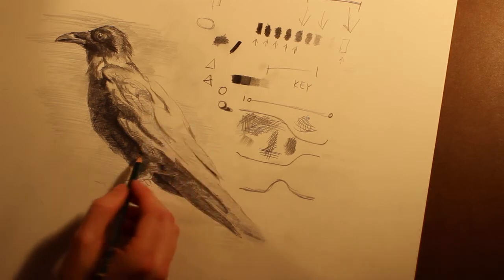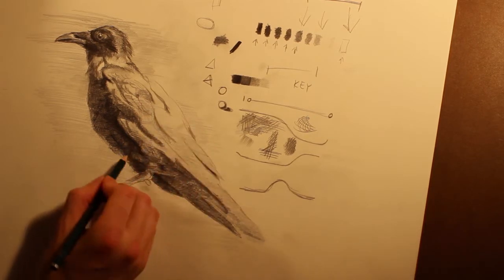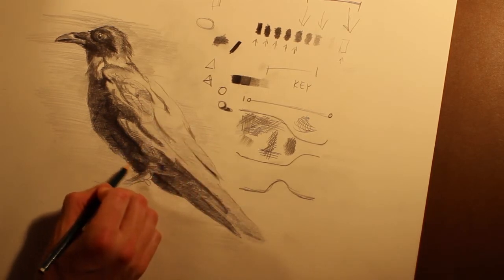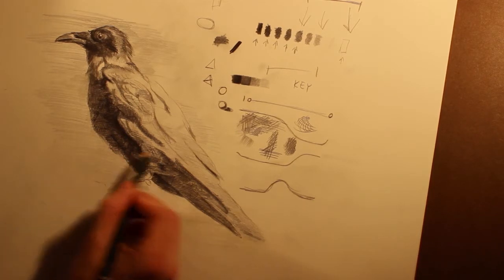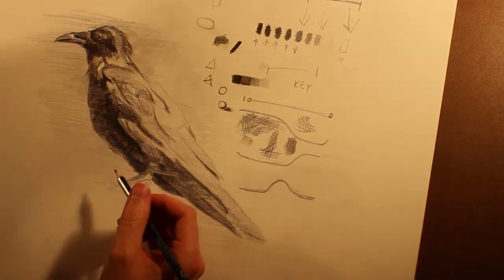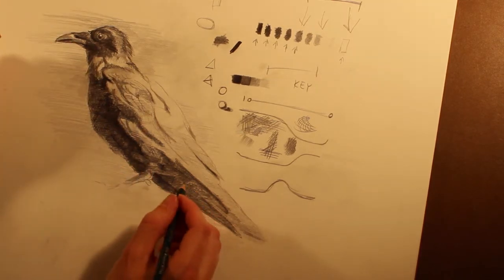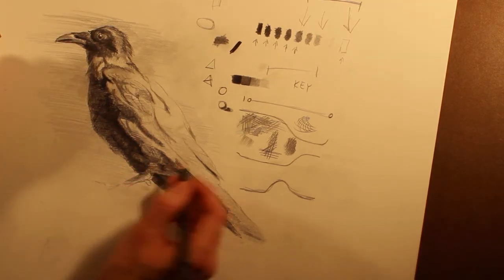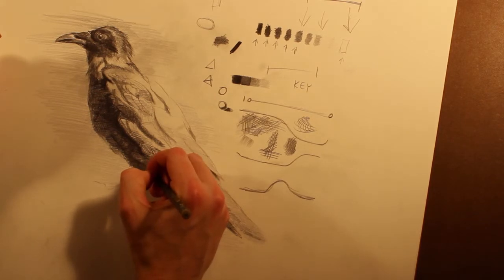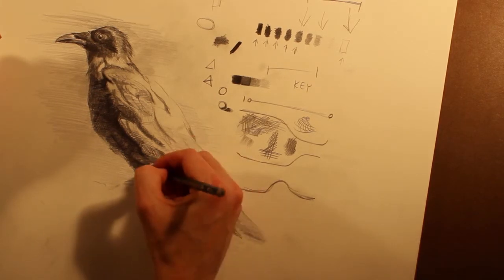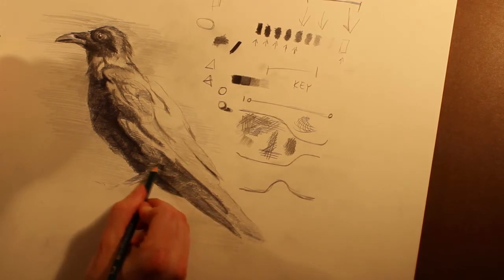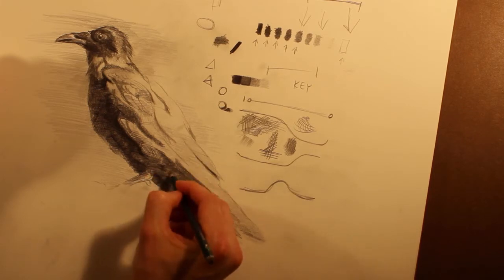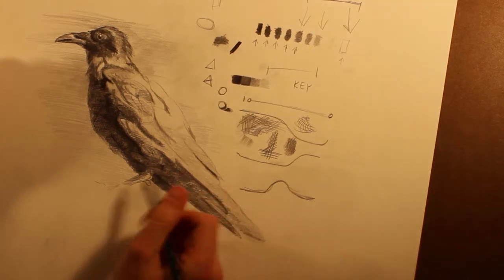So what I'm doing right now with the value is I'm taking the B pencil and kind of filling in some of the texture to change the value rather than adding more of the soft 5B look, which is kind of cool. It's a slightly different approach. Most people would say just use your soft pencil to get some darks in there, but really you can use anything.